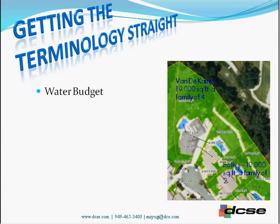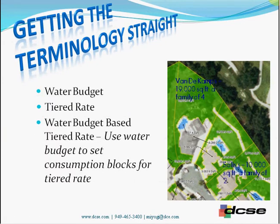Naturally, Vandicamp is always going to exceed that amount and be penalized. The question is: is that equitable and fair? That is the tiered rate system — not necessarily equitable or fair, but still the most widely used rate system. The third definition — water budget based tiered rate — is what we'll talk about the most. Here we use water budget to set consumption blocks for tiered rates, which is a little more fair and a lot more equitable.